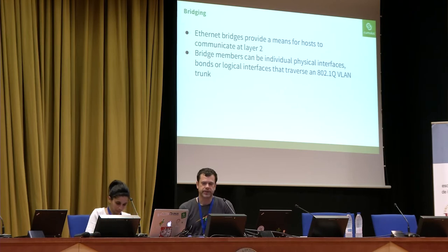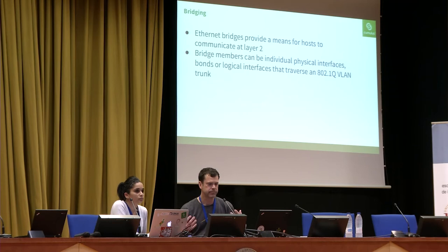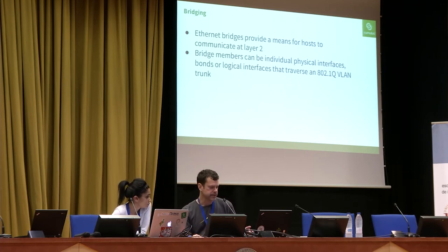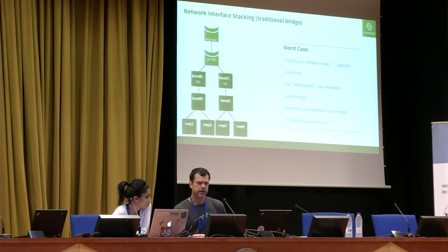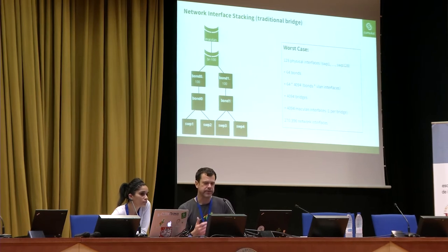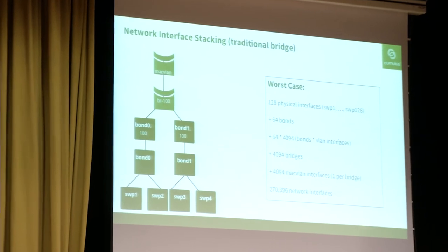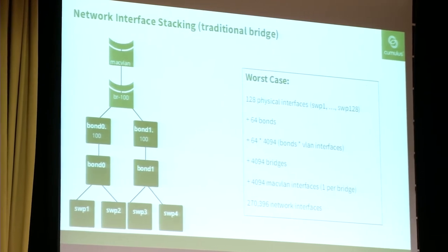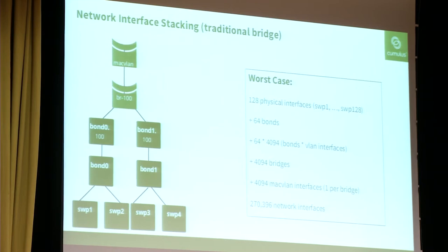When we start talking about deployments, the first one gets into Ethernet bridging, where you're connecting hosts at layer two. You could take physical interfaces, bonds, or logical interfaces like VLANs and plug them together into bridges. That's the basis of the first set of stacking examples. Starting at the bottom, we have our physical switch ports — those are our physical interfaces.